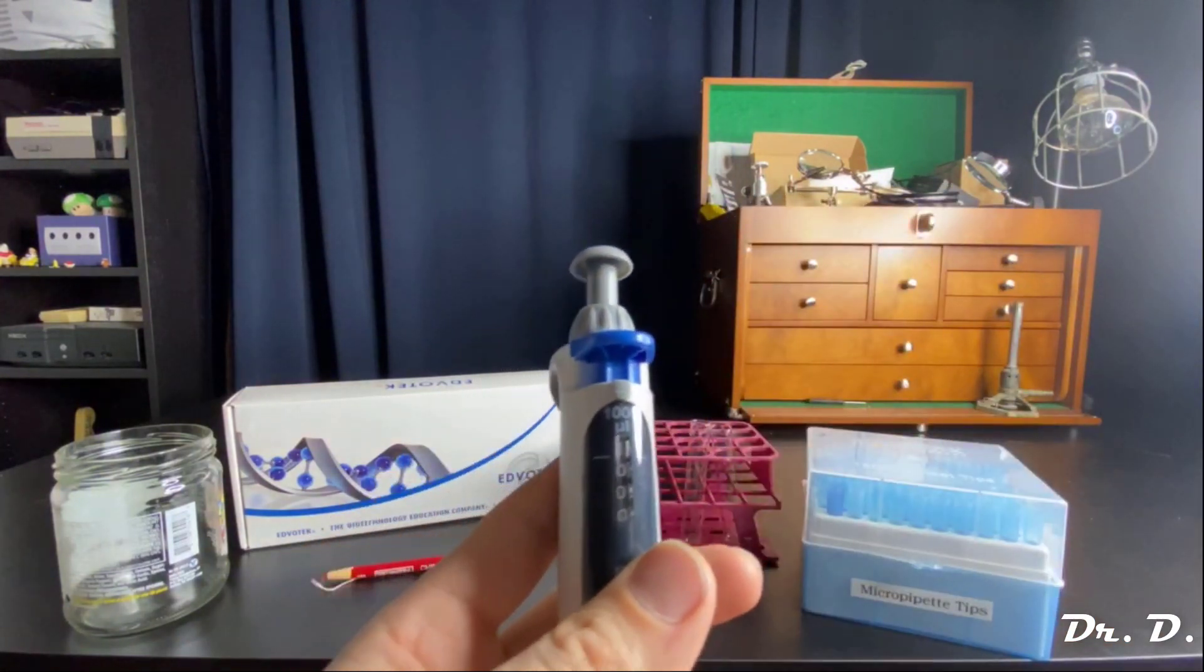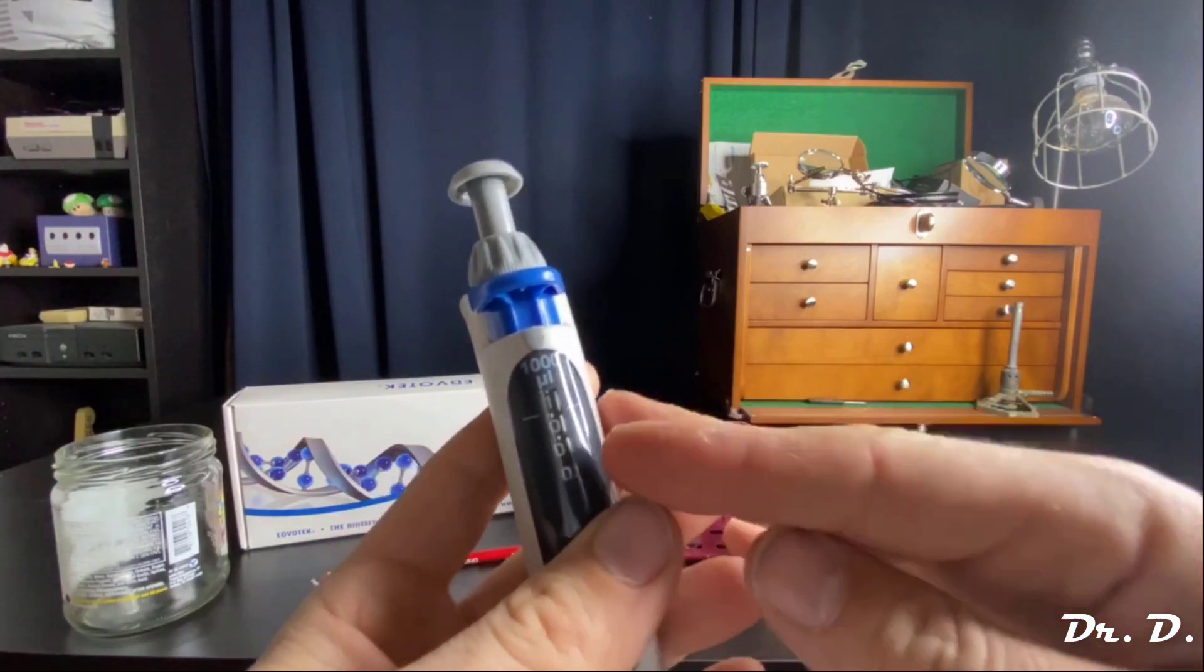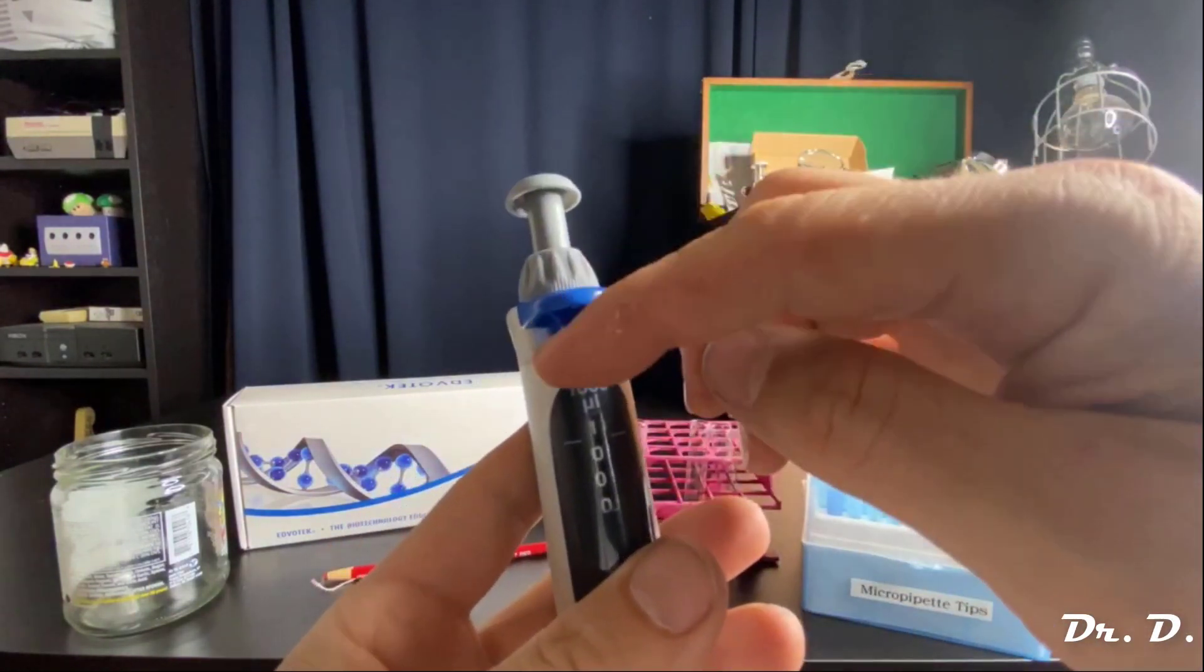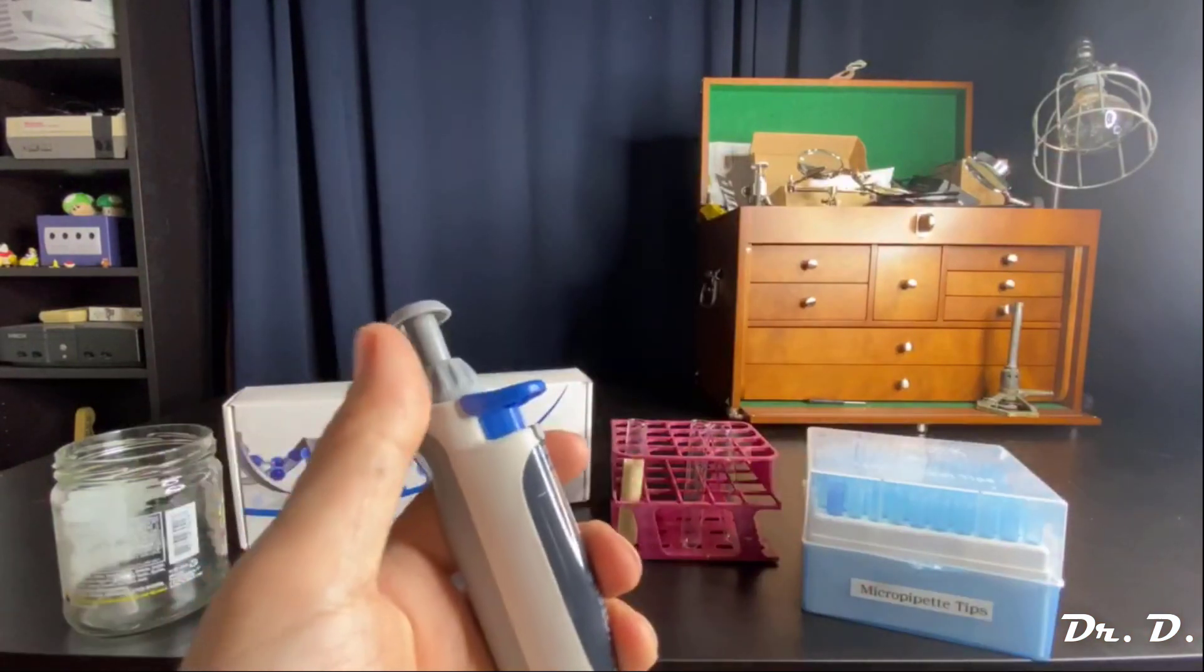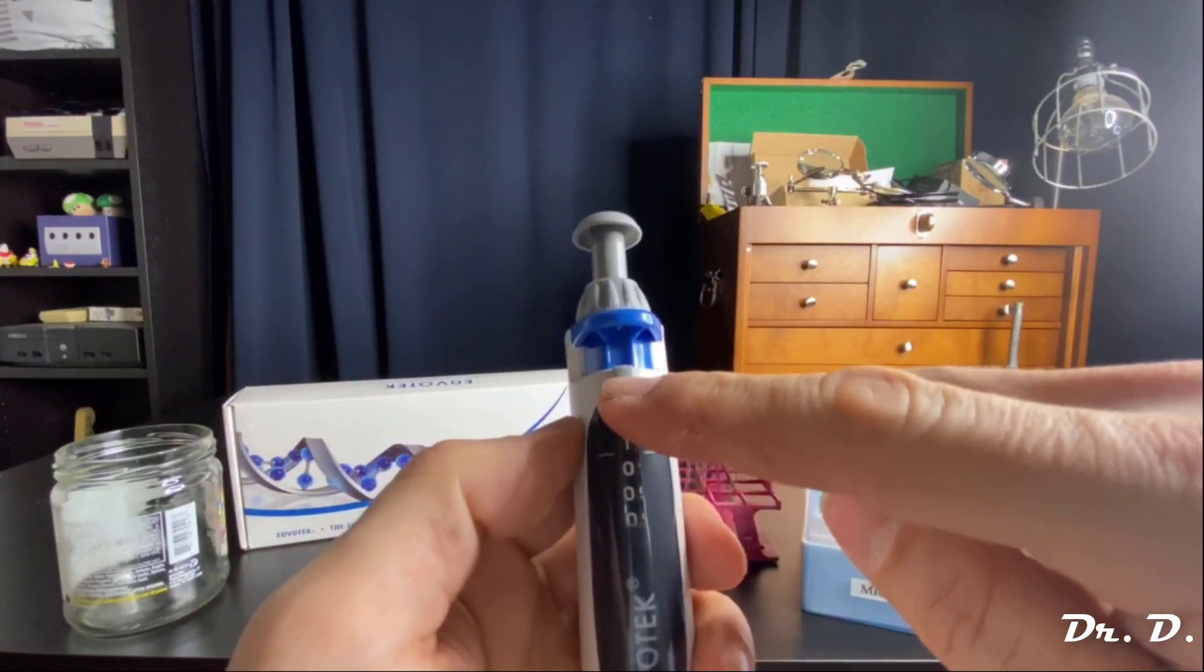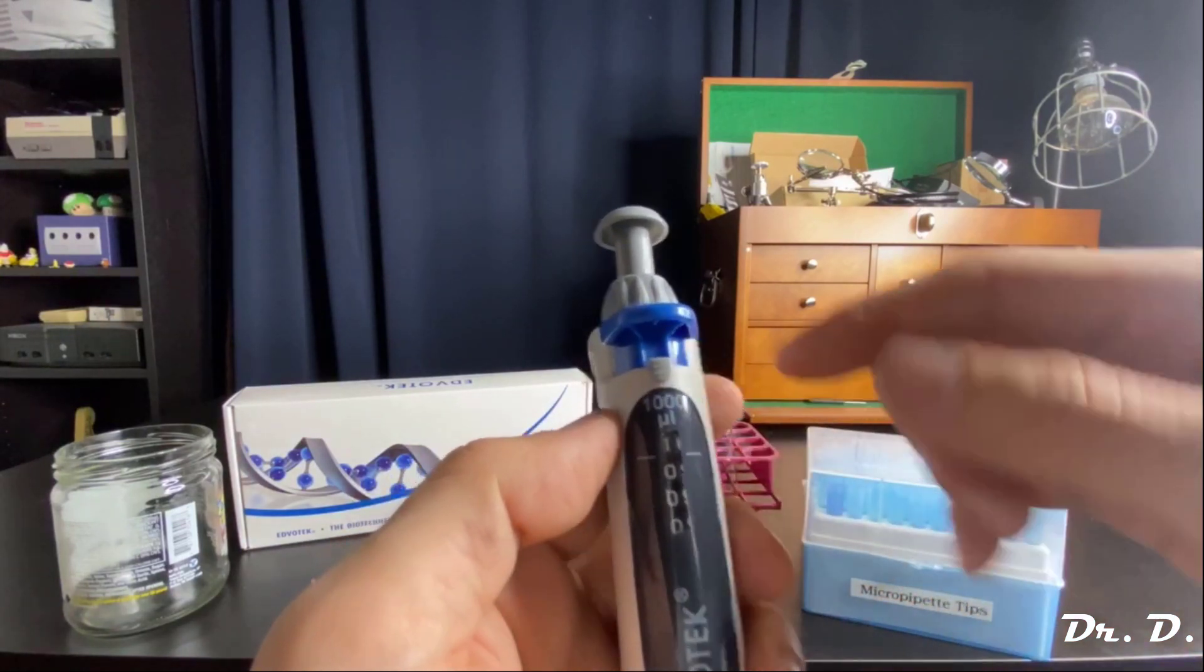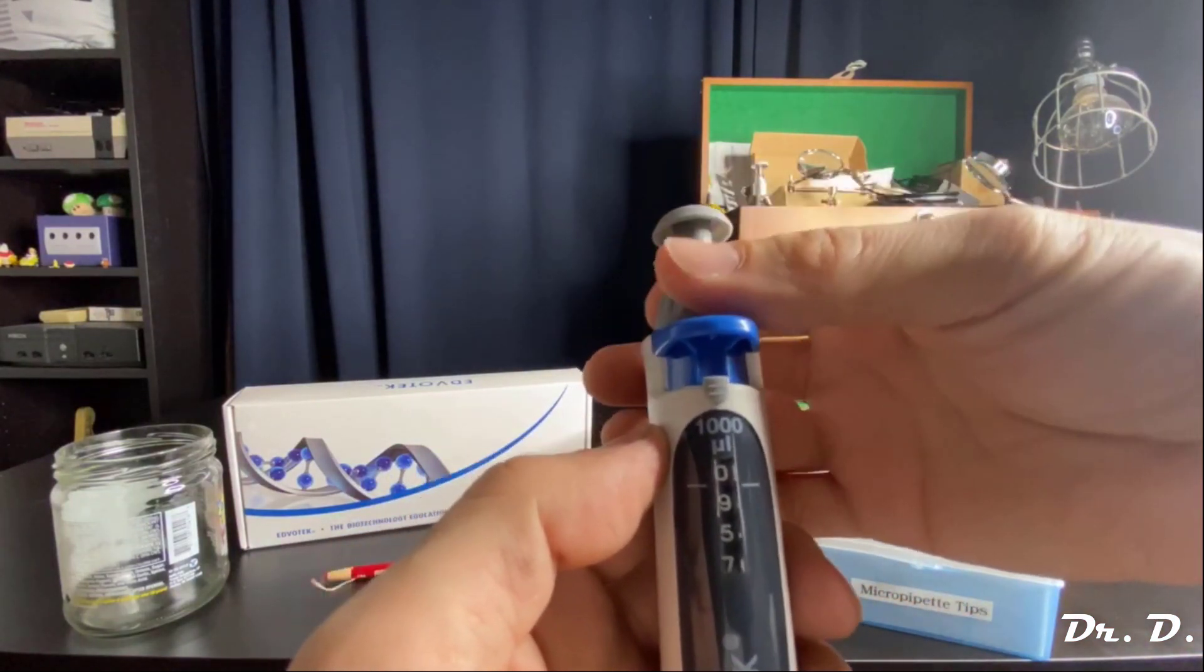So the manufacturers recommend that when you have set your micropipettor that you lock it in place and then use it. And then when you're ready to change the volume, you push this little notch up. You push that button up and that allows you to freely choose a new setting.